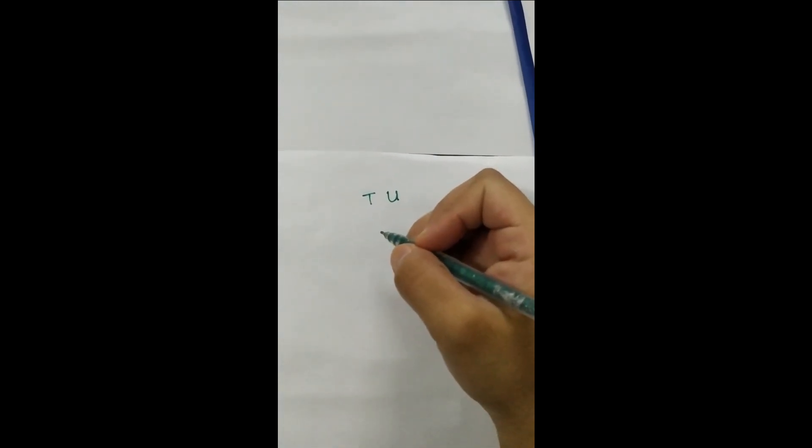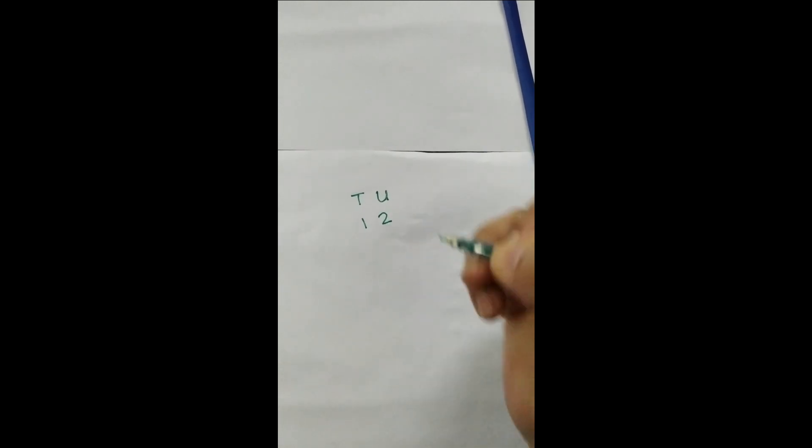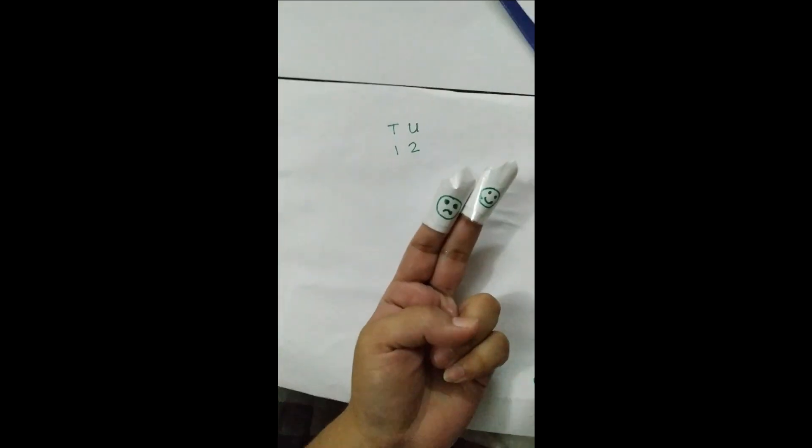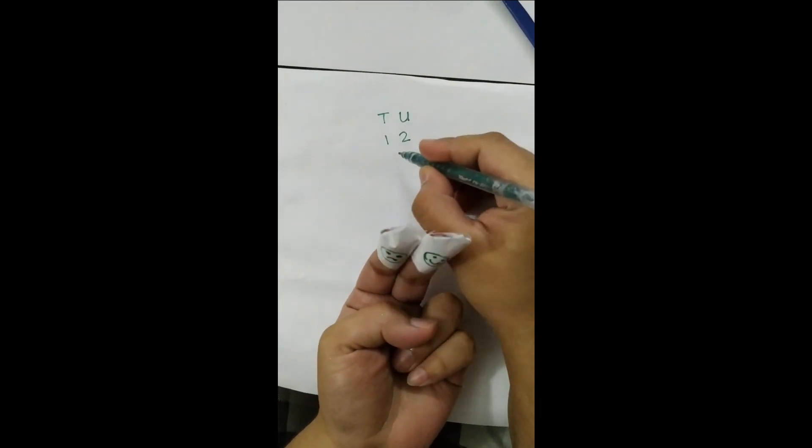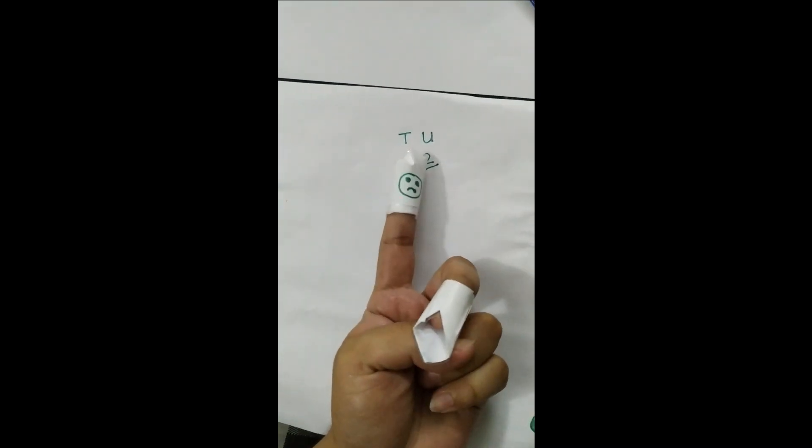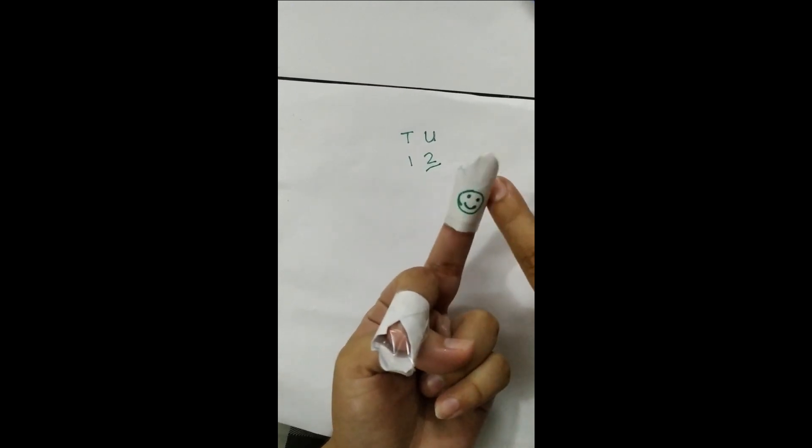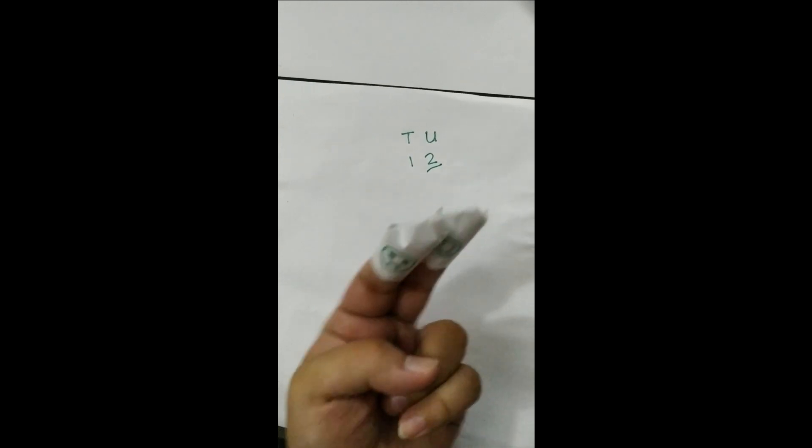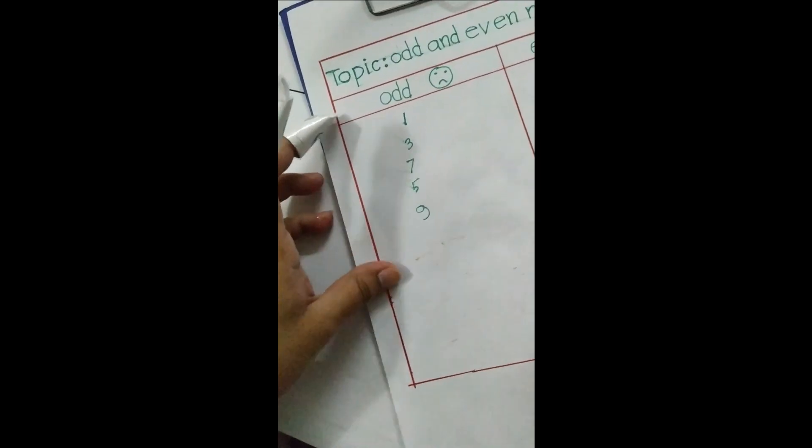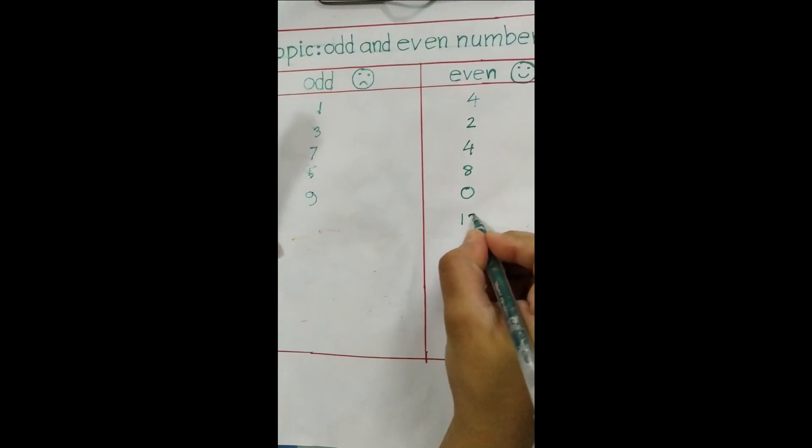If I have a number twelve, I am going to look at the units place. Then you will always observe the unit place when you will do the odd and even number. Like this, this is our unit number. Unit is two, so we can find out is it odd or even? So let's start: one, two. Two is happy, that means two is even. The whole number will be even. Then we will write here even, like this.